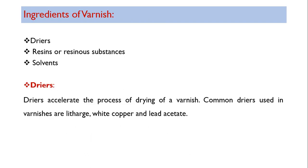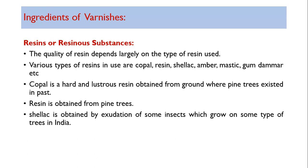The color of varnish should not fade with time. Ingredients of varnish are dryers, resins, and solvents — no pigments are present. Dryers accelerate the process of drying of varnish. Common dryers used in varnishes are litharge, white copper, and lead acetate.